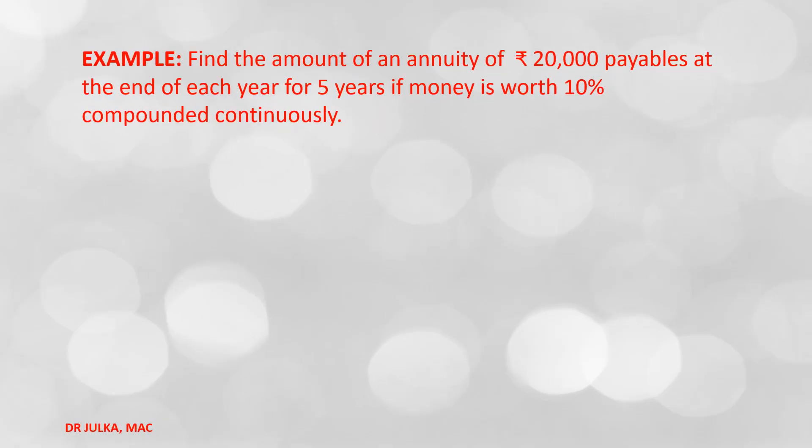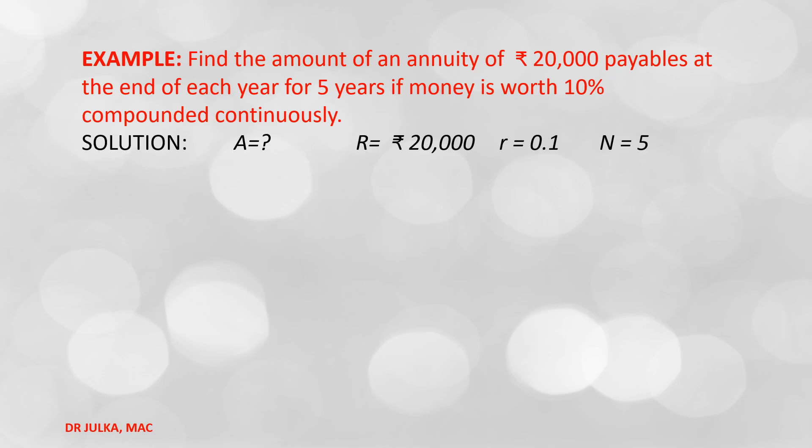Next example where interest is compounded continuously: find the amount of an annuity of Rs. 20,000 payable at the end of each year for 5 years if money is worth 10% compounded continuously. In this example, annuity amount R = Rs. 20,000, rate of interest r = 0.1, number of years n = 5, and we want to calculate the future value.